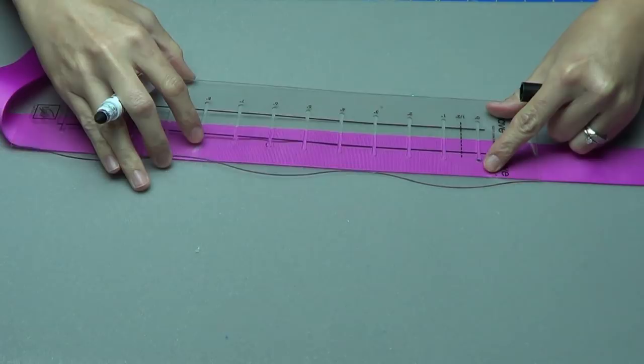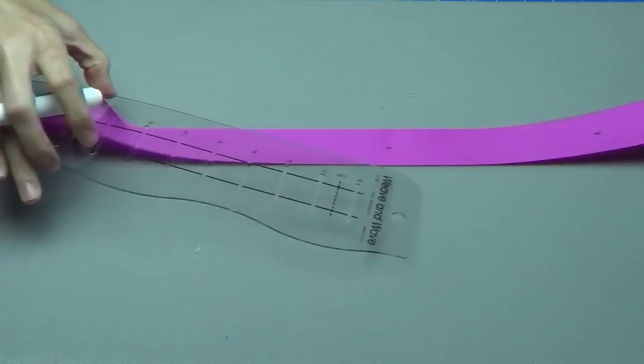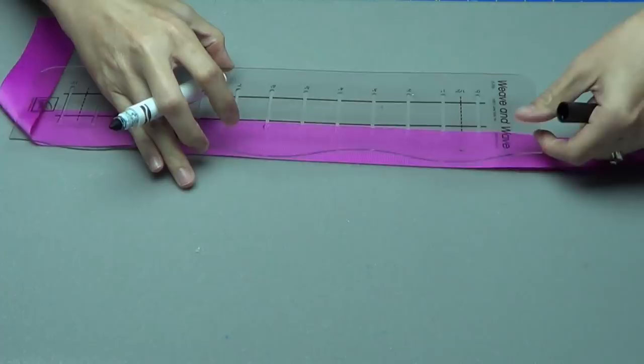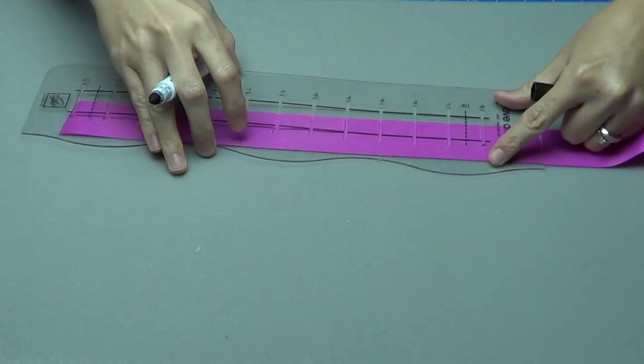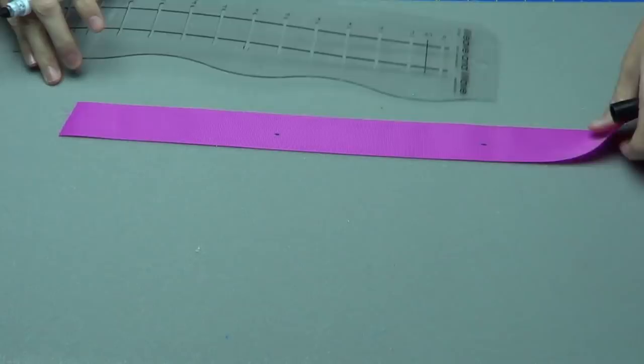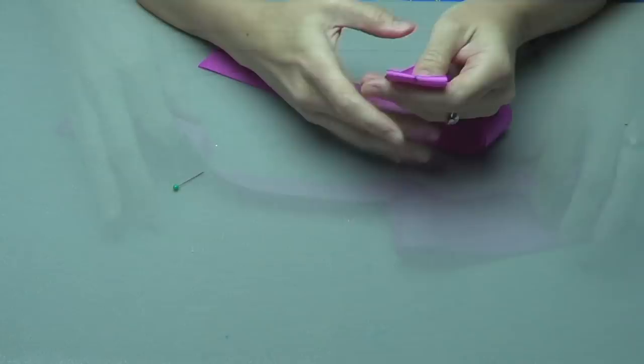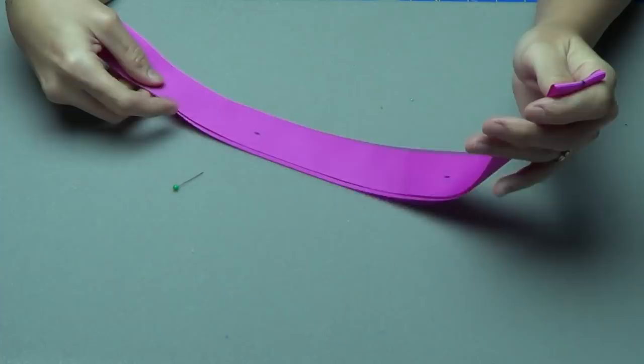...you really only need a tiny little pencil mark to help keep each loop proportional in size. You're going to go across the whole length of the ribbon. You can adjust this more or less depending on the width of the ribbon you're using and how wide you want the loops to be. When you're done you'll have six dots on your ribbon.